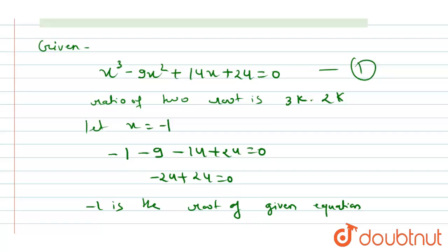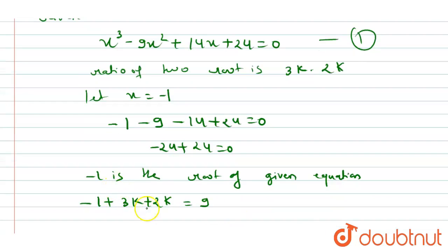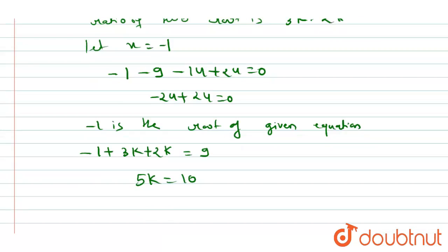Now what we will do? We will add -1 + 3k + 2k = -b/a, which means 9. When we solve this, we will get 5k = 10. And further solving this, we will get k = 2.